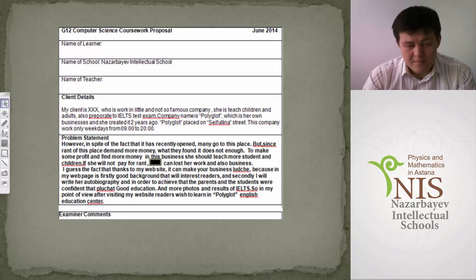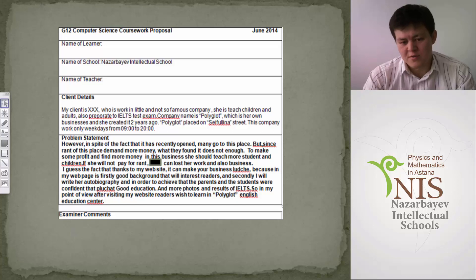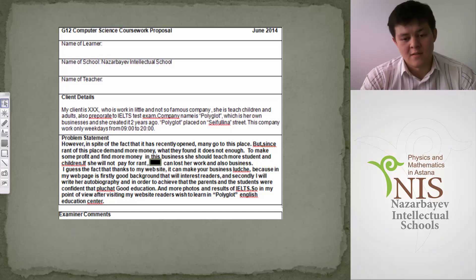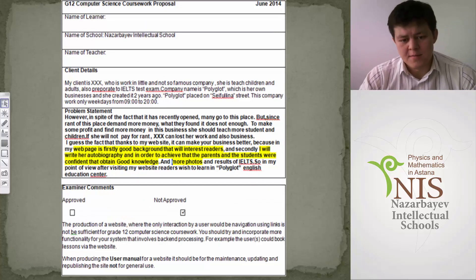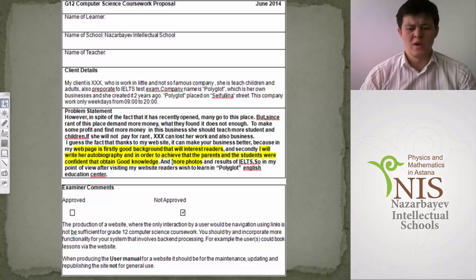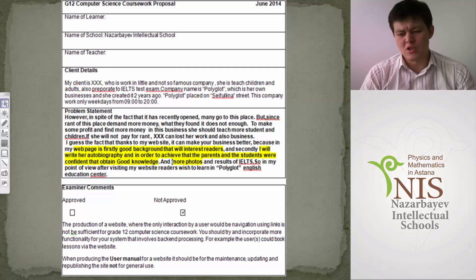Take one minute to decide: will you approve or not? Let's look at the right answer. This work was not approved. The examiner decided it was not sufficient for the 12th grade level. The suggestion was: the production of a website where the only interaction by the user would be navigation using links is not sufficient for grade 12 computer science coursework.